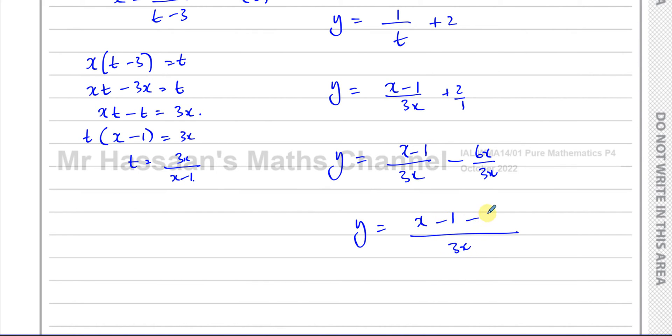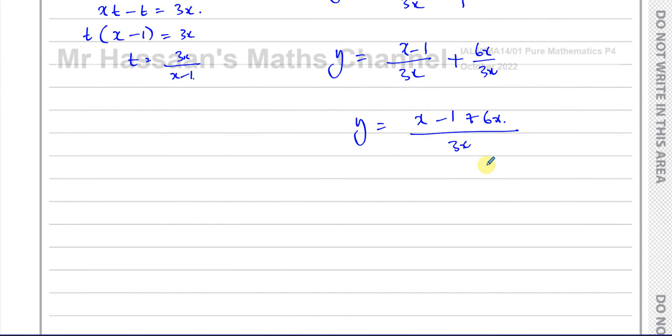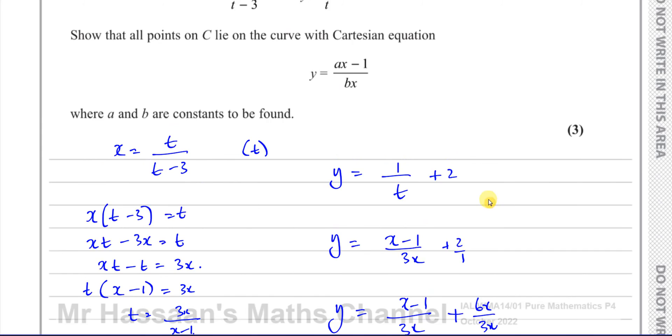Now I have the same denominator, I can write it as one single denominator which is 3x, and I have x minus 1 minus 6x. Sorry, plus 6x. There's a plus here. Why did that become a minus? So that's a plus 6x. Okay, that's plus. So then you got 6x plus x which is 7x. So 7x minus 1 over 3x, and that's exactly what we had to show.